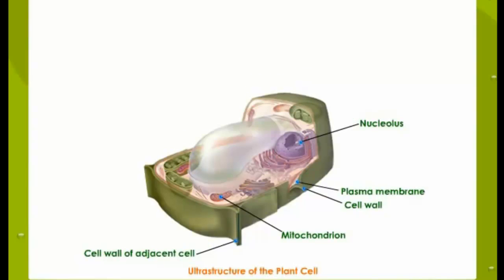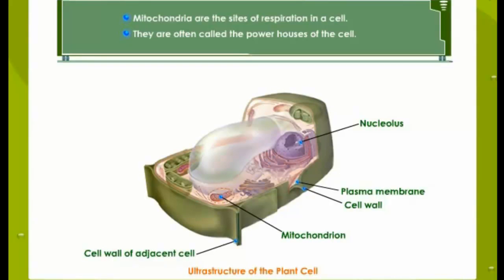It is a very powerful inhabitant in the cytoplasm of the cell. It is a fountain house of energy caught by the oxidation of respiratory substrates. It is the mitochondrion, extremely tiny, from 0.2 to 5 micrometer in size. Rod-shaped or spherical, their number varies from 50 to 50,000 depending on the energy expenditure.